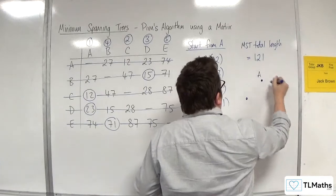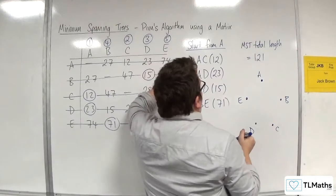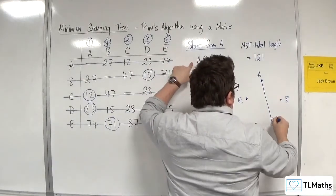Well I won't label them that well. Go A, B, C, D, E. And I've connected A to C, so 12, A to C.